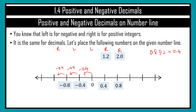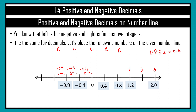Now try to guess which position will be for 1.2 — is it number one, number two, or number three? If you guessed one, correct, you have done well. Now let me know which one is for 2.0. If you guessed number three, you are correct.